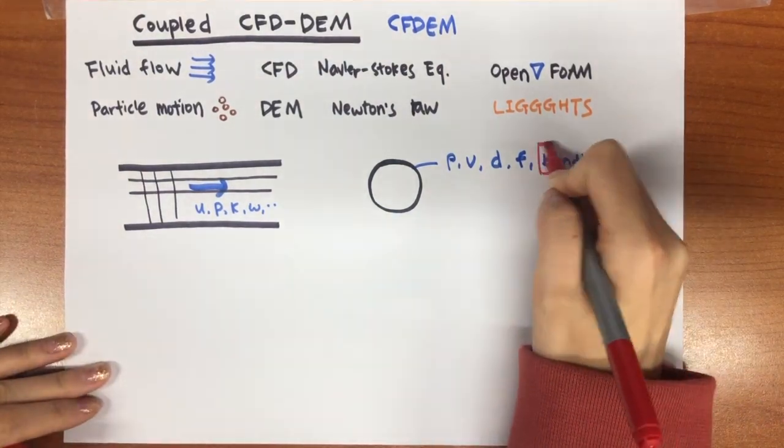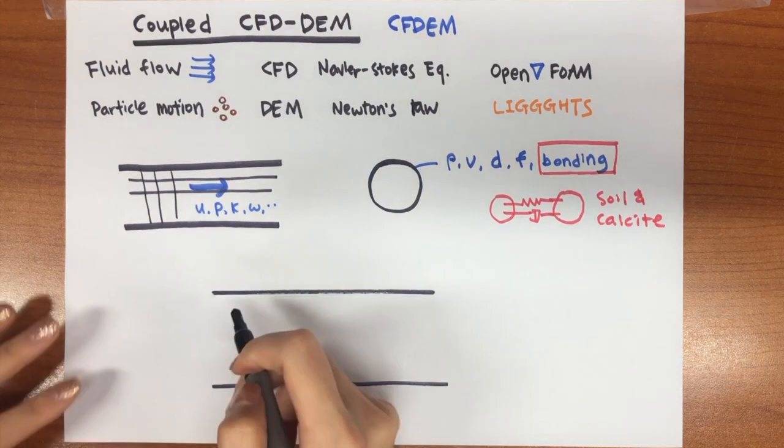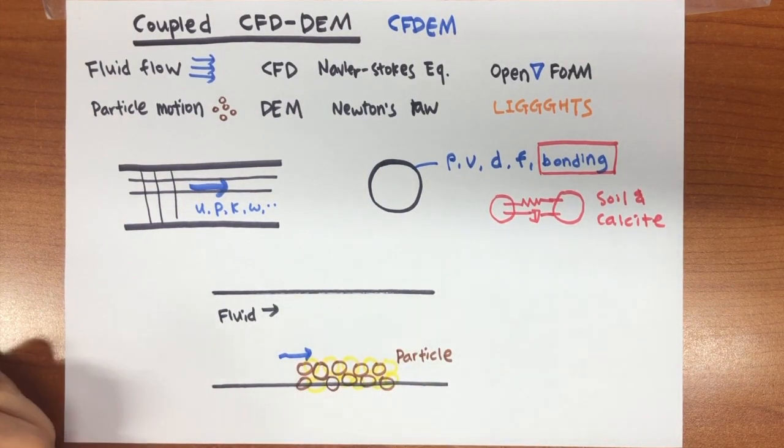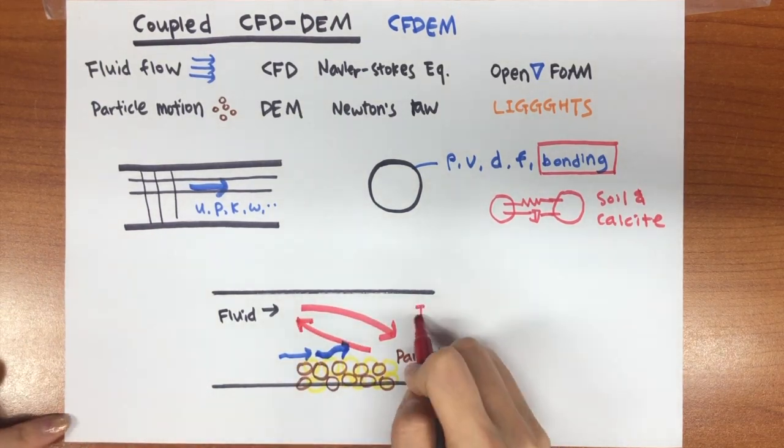When we expose soil particles to fluid flow, the motion of soil particles is determined by the force caused by water flow, and this particle motion also affects the fluid flow.